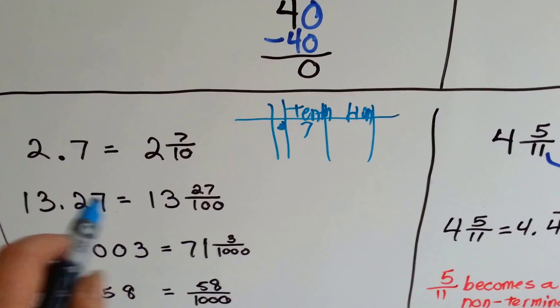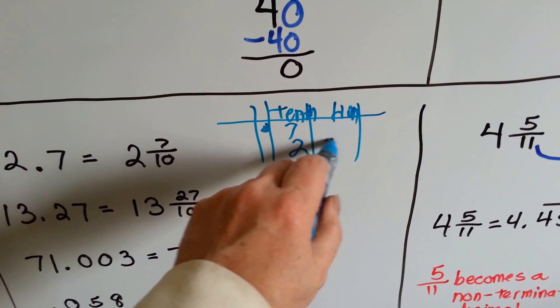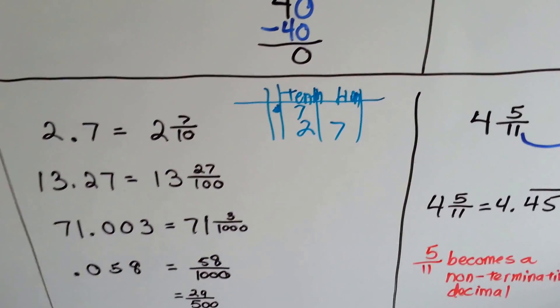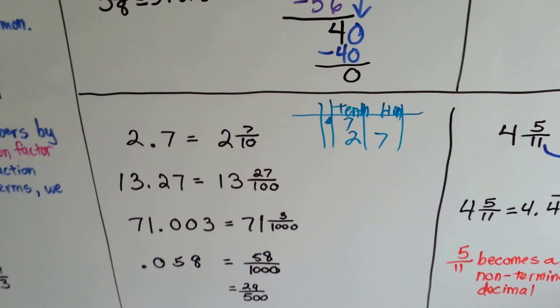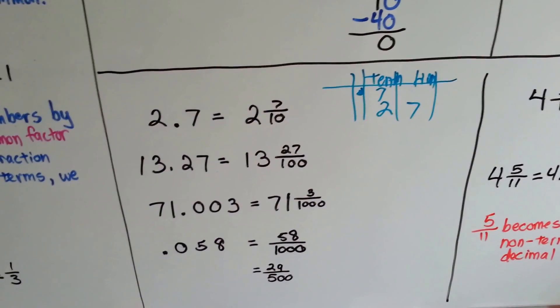For 13 and 27/100, 27 hundredths is like this on the place value chart. So we just put 27 over 100. It tells us what the denominator is going to be.